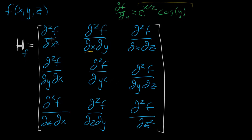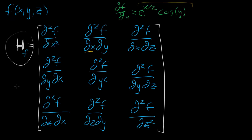You can see how this pattern extends: a four-variable function gives a four-by-four matrix of all possible second partial derivatives, and a 100-variable function would give a 100-by-100 matrix. The nice thing about having this notation is that we can reference all of that information with just one symbol. In the next video, we'll see how this makes it very convenient to express the quadratic approximation of any multivariable function — not just two-variable functions — without the symbols getting out of hand, by doing matrix operations on the Hessian as a whole.